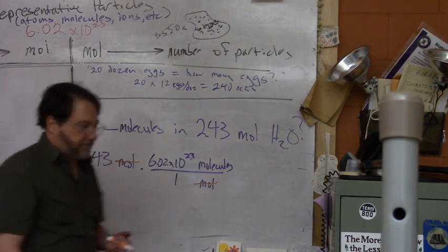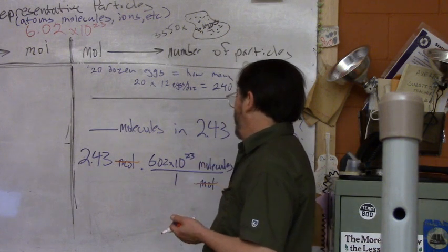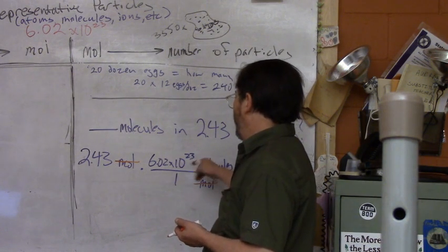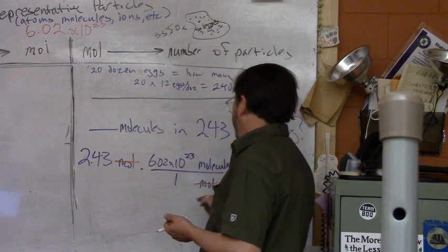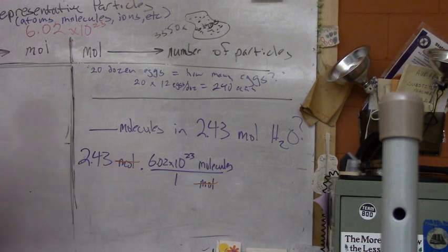One mole on the bottom, because one mole is 6 times 10 to the 23rd. So you're really just multiplying this times one in a way that cancels out moles and replaces it with molecules. Now you just have a math problem.